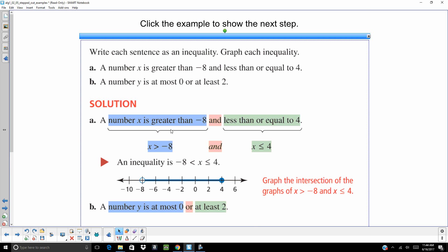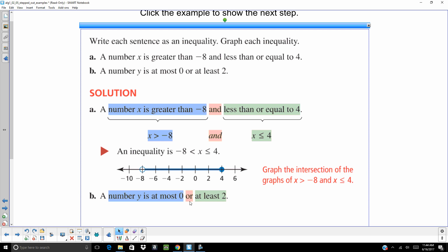On part B, a number y is at most 0 or at least 2. On this one, you have the word or. That means it can be either of them.